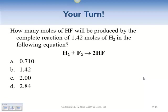How many moles of HF need to be produced by the complete reaction of 1.4 moles of H₂? We're going from H₂ to HF, and that ratio is one to two. So you're doubling the amount, giving 2.8 moles — so you have 2.14 moles.